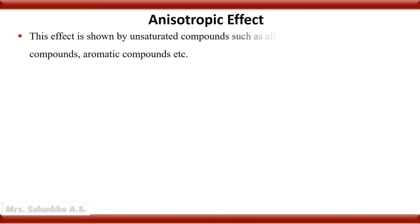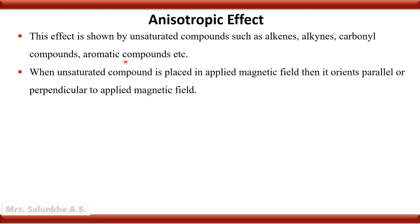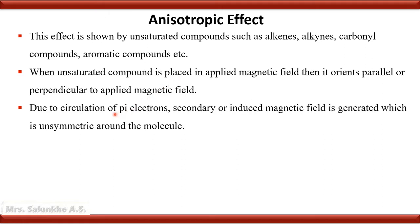Anisotropic effect is observed in unsaturated compounds such as alkenes, alkynes, carbonyl compounds, and aromatic compounds. When such an unsaturated compound is placed in an applied magnetic field, it orients parallel or perpendicular to the applied magnetic field. Due to the circulation of pi electrons in the pi bonds, a secondary or induced magnetic field is generated. That induced magnetic field is unsymmetric around the molecule, which is known as anisotropic.